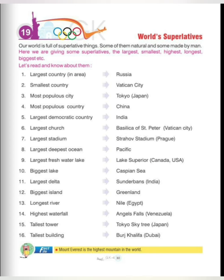In this chapter we will discuss about the smallest, highest, longest, shortest — every kind of superlative things made by nature or by men. First is largest country: Russia is the largest country in area. Second is smallest country: Vatican City. Third is most populous city: Tokyo, Japan.